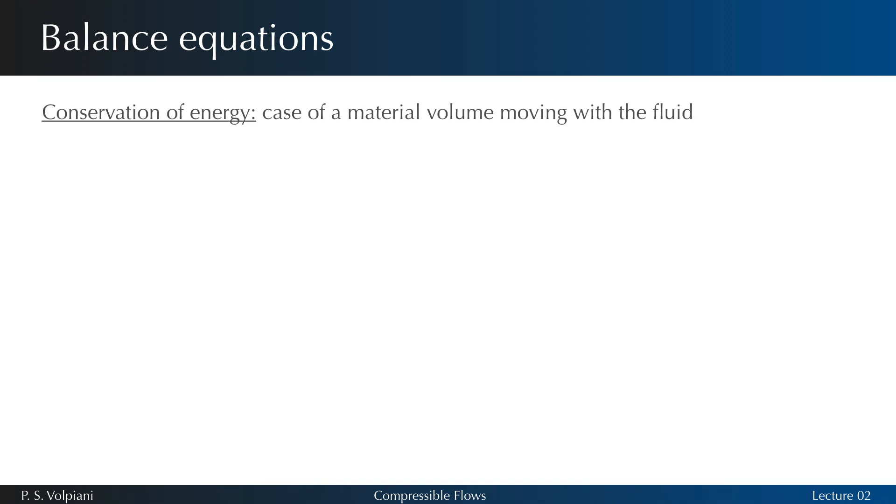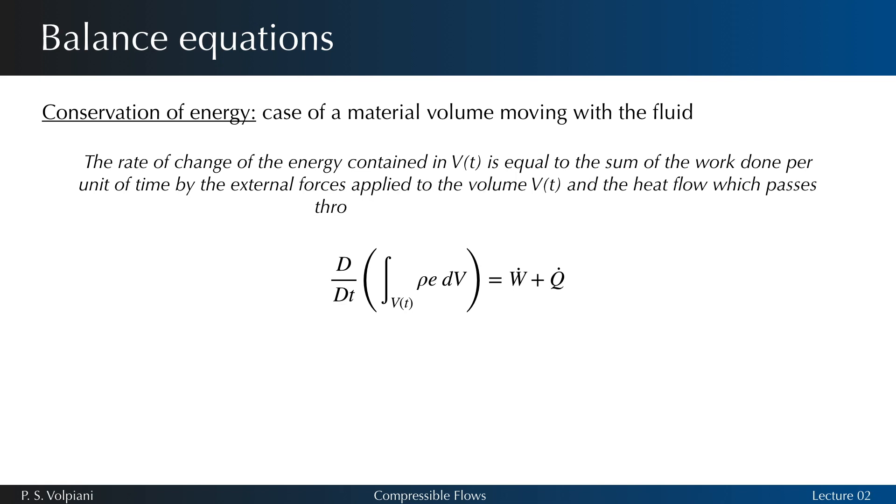The first principle of thermodynamics applied to the material control volume states that the rate of change of the energy contained in the material volume is equal to the sum of the work done per unit of time by the external forces applied to the material volume and the heat flow which passes through unit of time to the material surface. The rate of change of the total energy contained in V is given by the sum of the work per unit of time done by the external forces applied to V and the heat flow per unit of time through S.